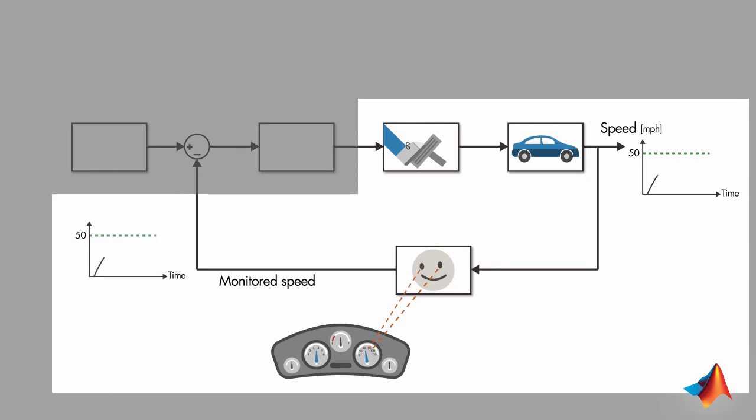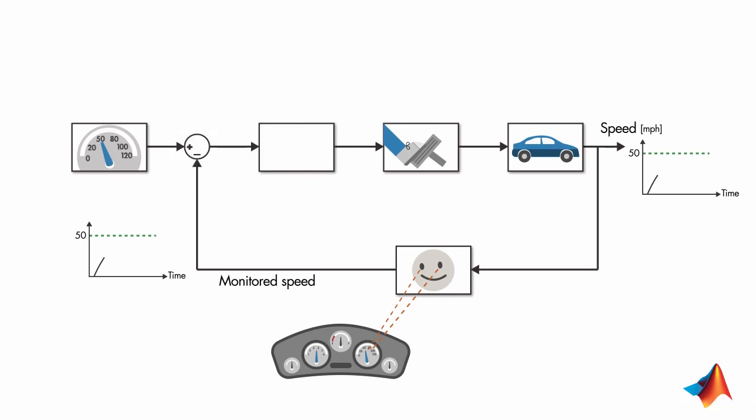Then you compare it to what you want. This is done by finding the difference between the desired and monitored speed. And it is called the error.